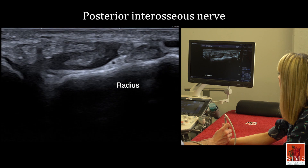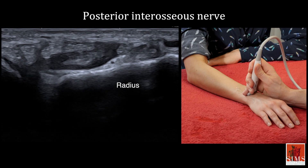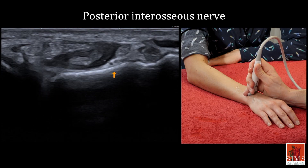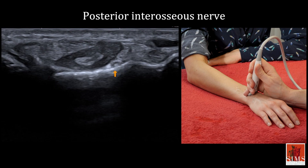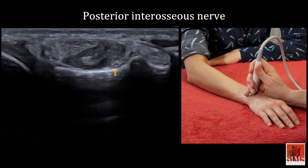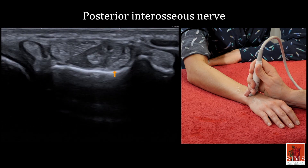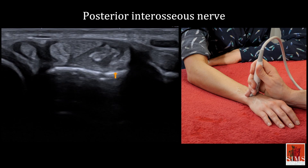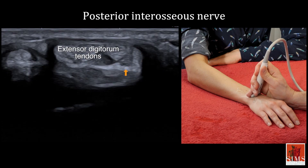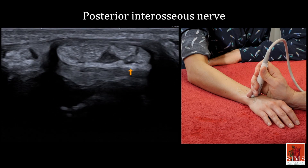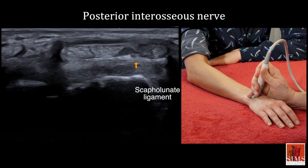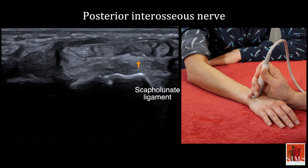The posterior interosseous nerve becomes harder to see more distally in the forearm, but it is sometimes easily found by looking at the dorsal surface of the wrist right here, deep inside the extensor tendons, near the posterior fibres of the scapholunate ligament.